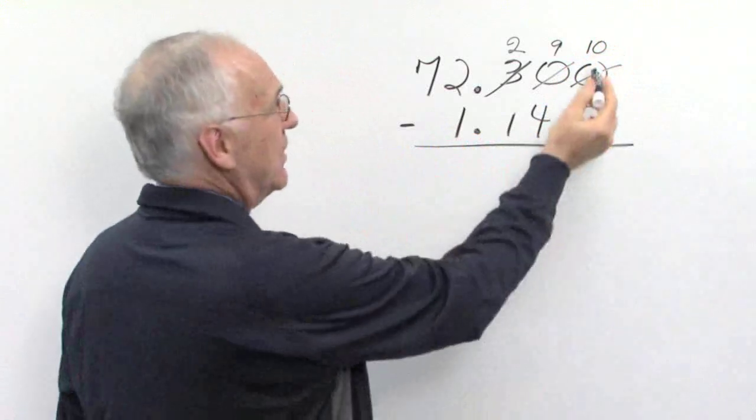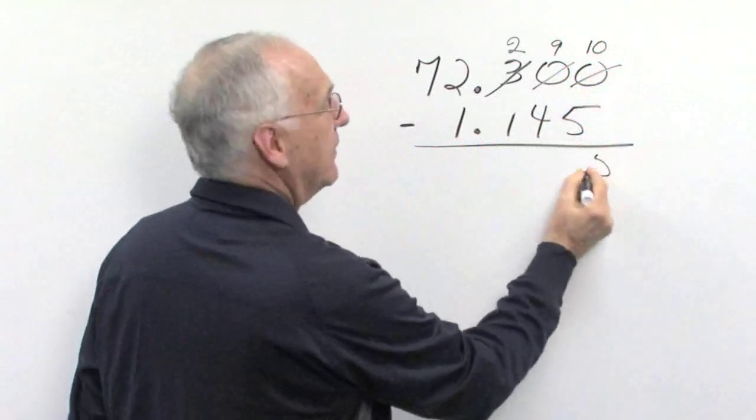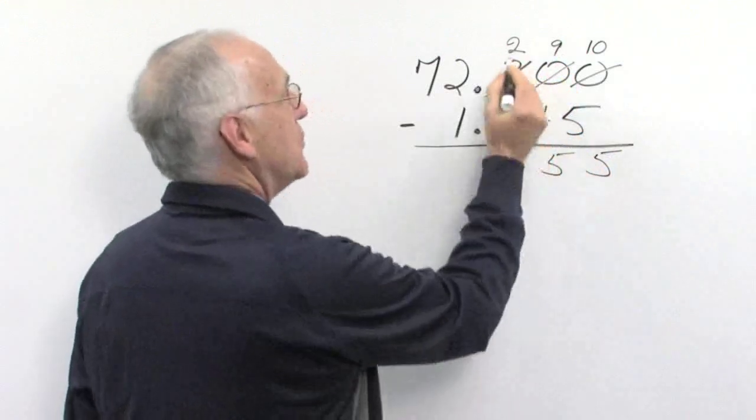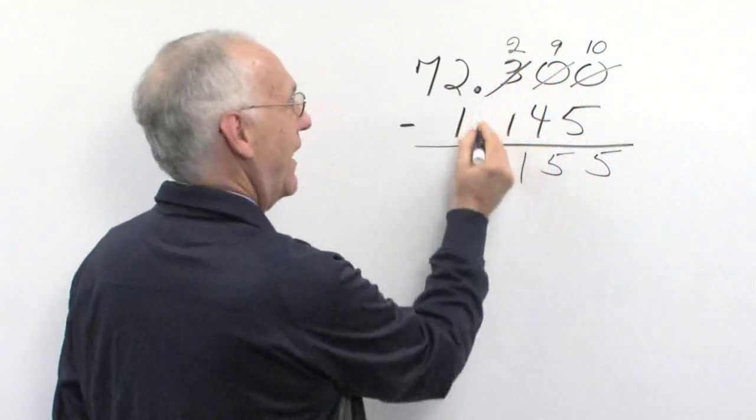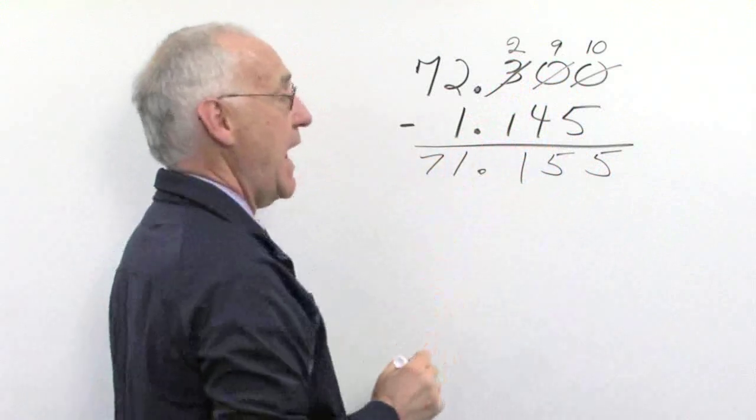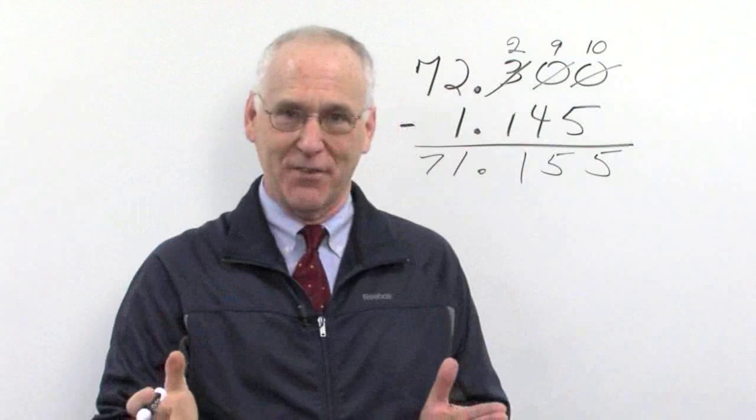So in this case, ten take away five is five. Nine take away four is five. Two take away one is one. Align the decimal. And this becomes seventy-one and one hundred fifty-five thousandths.